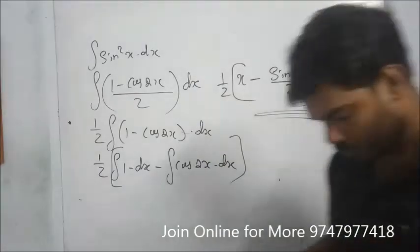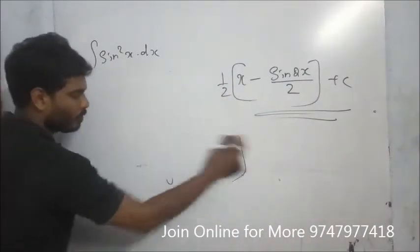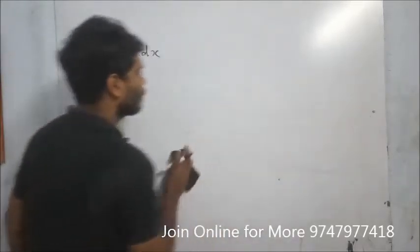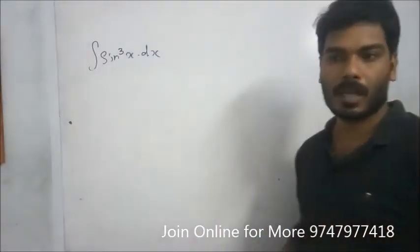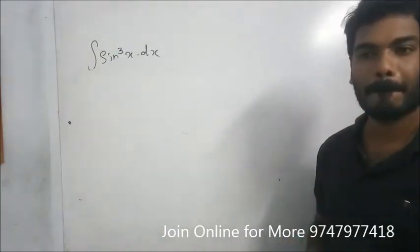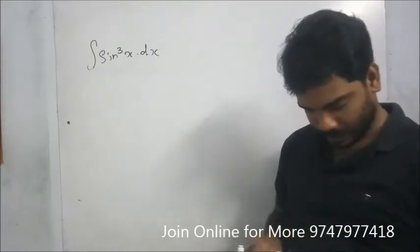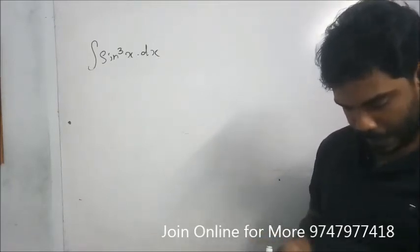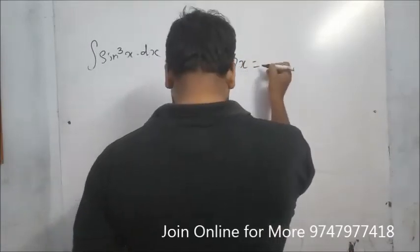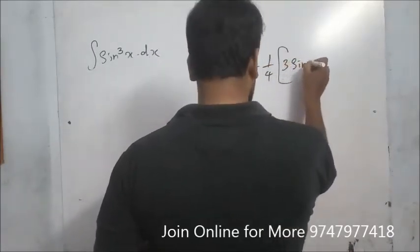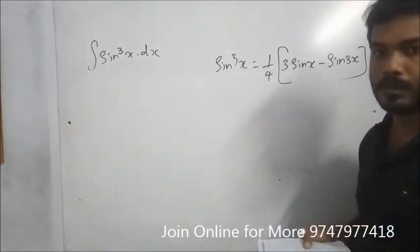Next question is integral of sin³x dx. We use the formula for sin³x: sin³x equals (3 sin x minus sin 3x) divided by 4, or equivalently 3 sin x minus sin 3x all over 4. Use this formula.